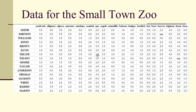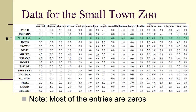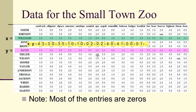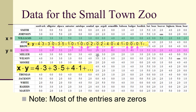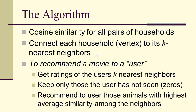Here's the data for the Small Town Zoo. Most of the entries are zeros because people haven't seen all the exhibits. If x is the Williams household and y is the Davis household, then x·y is shown there — notice all the zeros, which don't play a role. Only the non-zero entries — the animal exhibits they've seen in common — actually play a role. The algorithm is simple: compute cosine similarity for all pairs of households, then connect each household to its k nearest neighbors in the sense of cosine similarity.